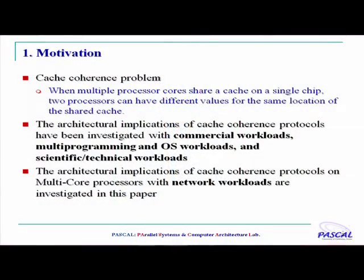As you know, multi-core chips are really commercially available now. They are usually organized around a central memory system which has the cache coherence problems we know, where the same data element can be shared amongst several processors. This issue of cache coherence has been studied in the past in many different contexts, including commercial workloads, multi-programming, OS workloads, and scientific technical workloads.